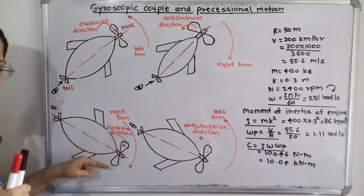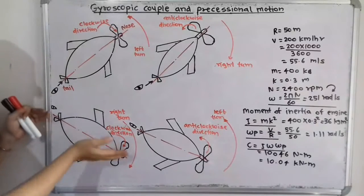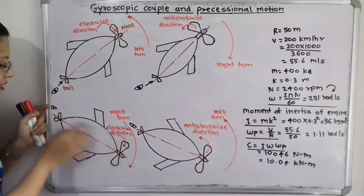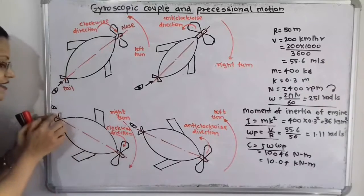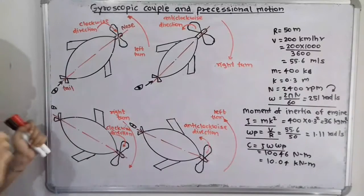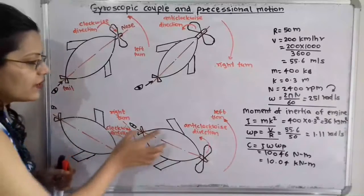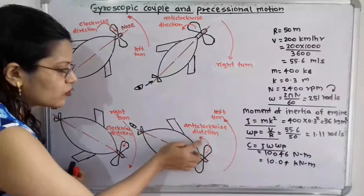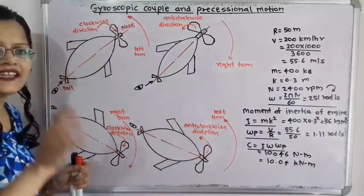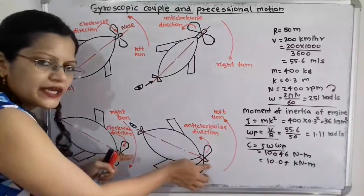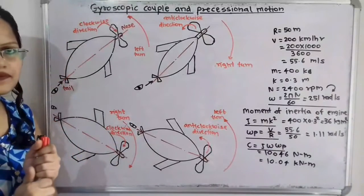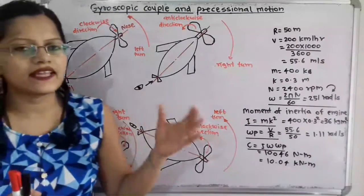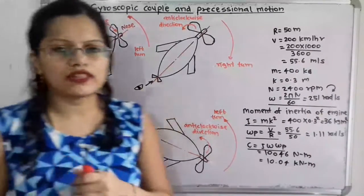When the propeller is rotating in clockwise direction and the aeroplane is taking a turn towards the right hand side, there is a dip in nose and raise in tail. Similarly, when the aeroplane is taking a left turn and the propeller is rotating in anticlockwise direction, there is a dip in nose and raise in tail. We have to keep all these conditions in mind before solving the problem.